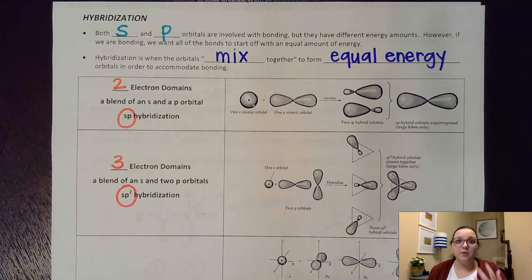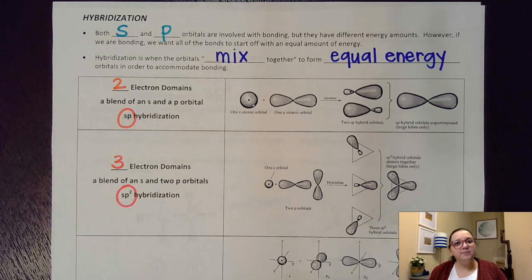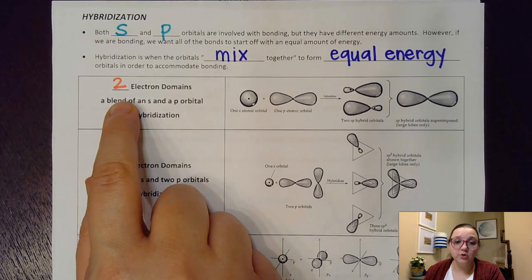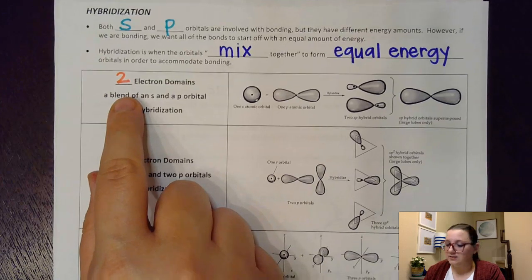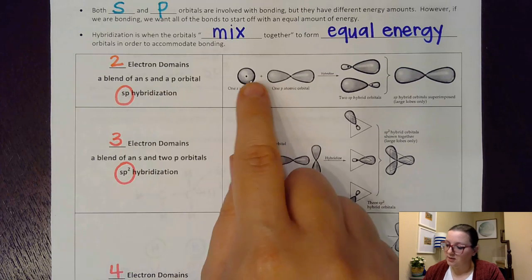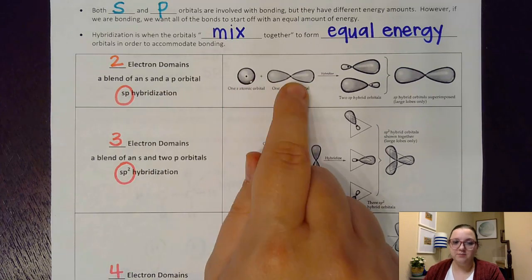If I have single bonds all the way around something, I want to ensure that we're starting off on a level playing field and that those orbitals have an equal energy associated with them. Now this is going to be tied to where we discussed electron domains. If you have an element and you're trying to figure out the hybridization around it, you would count how many electron domains are around that central atom, and it will basically tell you what the hybridization is. So for example, if you have two electron domains, the idea is that an S and a P orbital have had to blend together in order to create two orbitals that have equal energy. So you can see here, here's an S cloud and a P cloud.